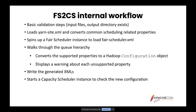The tool's internal workflow is the following. After basic validation steps — checking that input files and output directory exist — it loads the YarnSite.xml and converts global scheduling-related properties like preemption and continuous scheduling. Then it spins up a FAIR Scheduler instance to parse the FairScheduler.xml allocations file. It works through the queue hierarchy, converts supported properties to Hadoop configuration objects, and displays warning messages for each unsupported property.